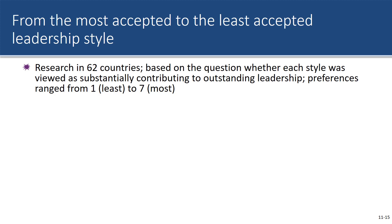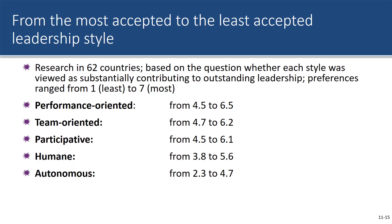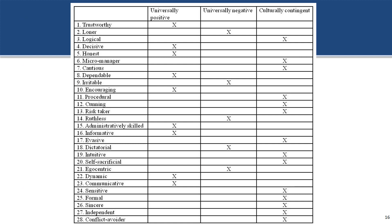Research across 62 countries asked whether each leadership style was viewed as substantially contributing to outstanding leadership, with preferences rated from one to seven — one being least, seven being most. Performance-oriented scored the highest, and team-oriented also scored very well. There's also a very interesting slide that looks at characteristics of a leader and categorizes which are considered universally positive, universally negative, and which are culturally dependent. It's interesting what is considered negative and what actually is negative — those are very different things.